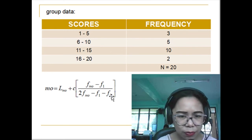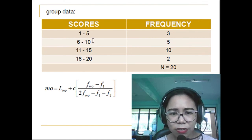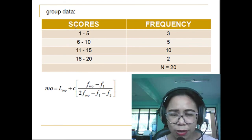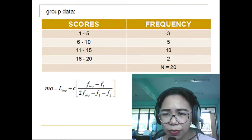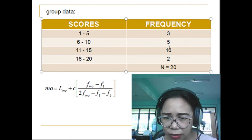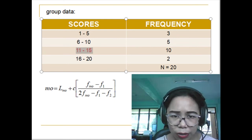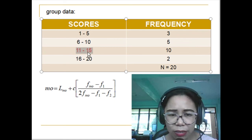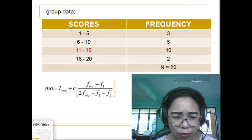To determine the modal class from the class intervals, we simply find the class with the highest frequency — since that is the concept of the mode. Among all the frequencies, the highest is 10, so the interval with frequency 10 is our modal class. We expect the modal value to fall within this interval, and we will apply the formula to calculate the mode.